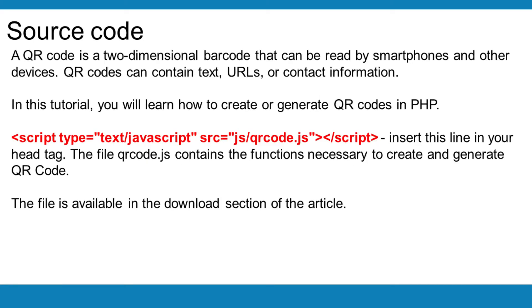A QR code is a two-dimensional barcode that can be read by smartphones and other devices. QR codes can contain text, URLs, or contact information. In this tutorial, you will learn how to create or generate QR codes in PHP.